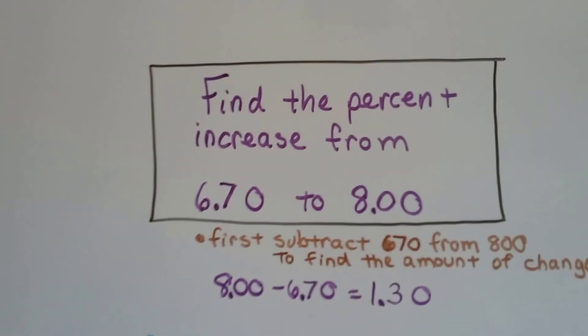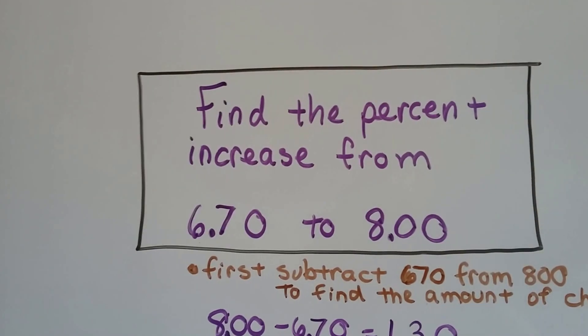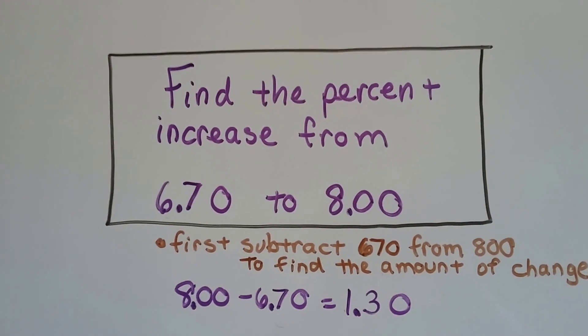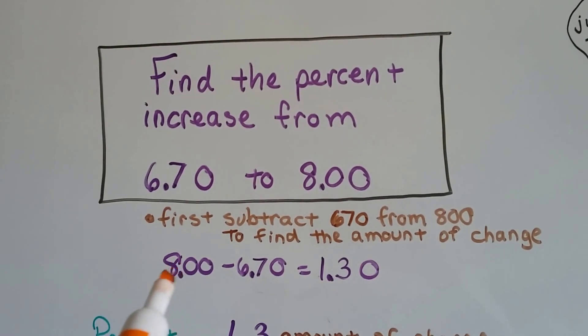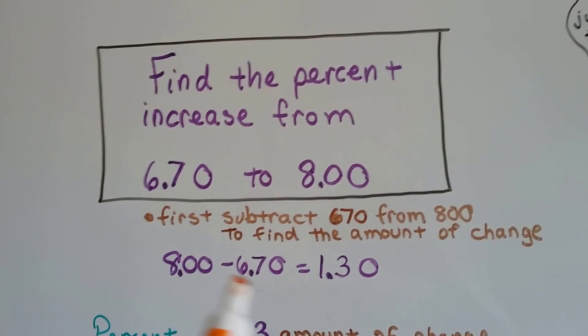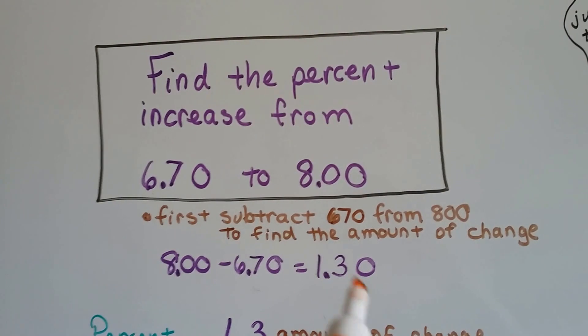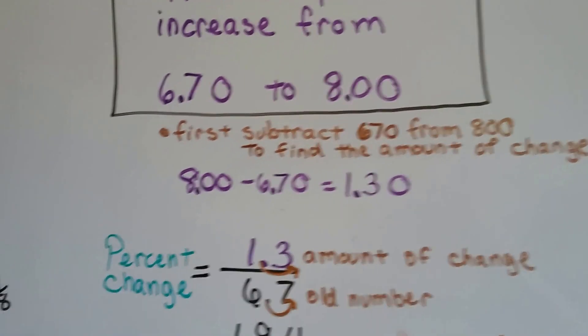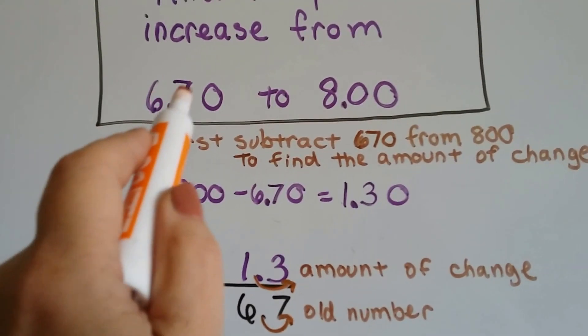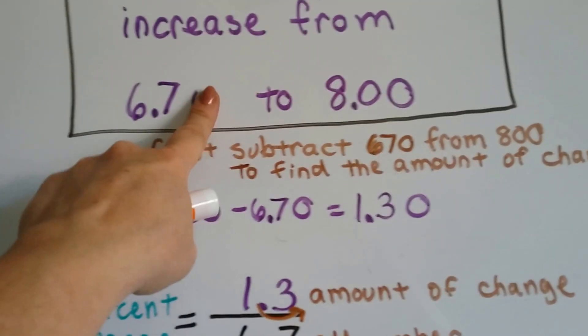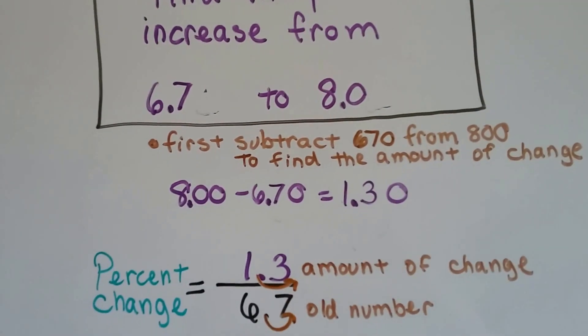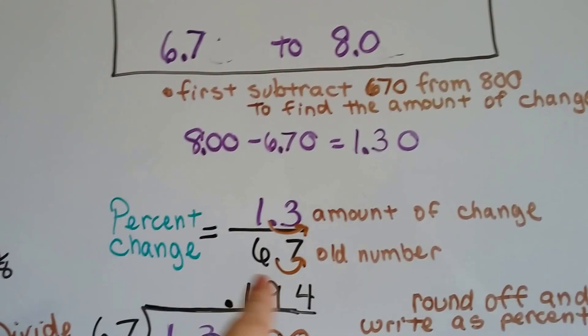Find the percent increase from 6.70 to 8.00. The first thing we're going to do is subtract the 6.70 from the 8.00, and that's 1.30 or 130. We're going to take it as 1.3. And we have to put it over the old number, the 6.7, because this 0 isn't really necessary.